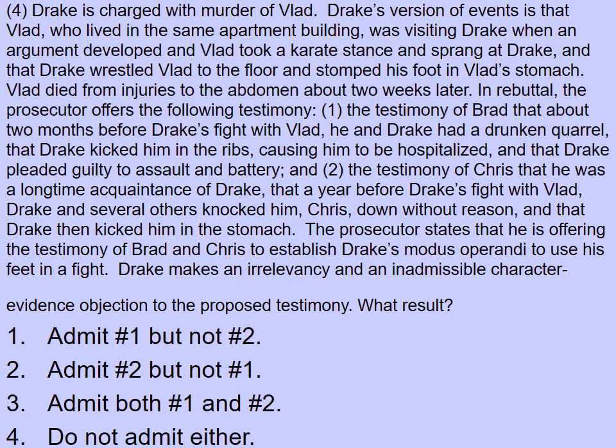The book uses just letters D and V, but I added actual names. Drake is charged with the murder of Vlad. Drake's version is that Vlad, who lived in the same apartment building, was visiting Drake when an argument developed and Vlad took a karate stance and sprang at Drake — and that Drake then wrestled Vlad to the floor and stomped his foot in Vlad's stomach. Vlad died from injuries to his abdomen a couple of weeks later. Drake is claiming self-defense, admitting he was in the fight with Vlad but saying he had no choice because Vlad attacked him.